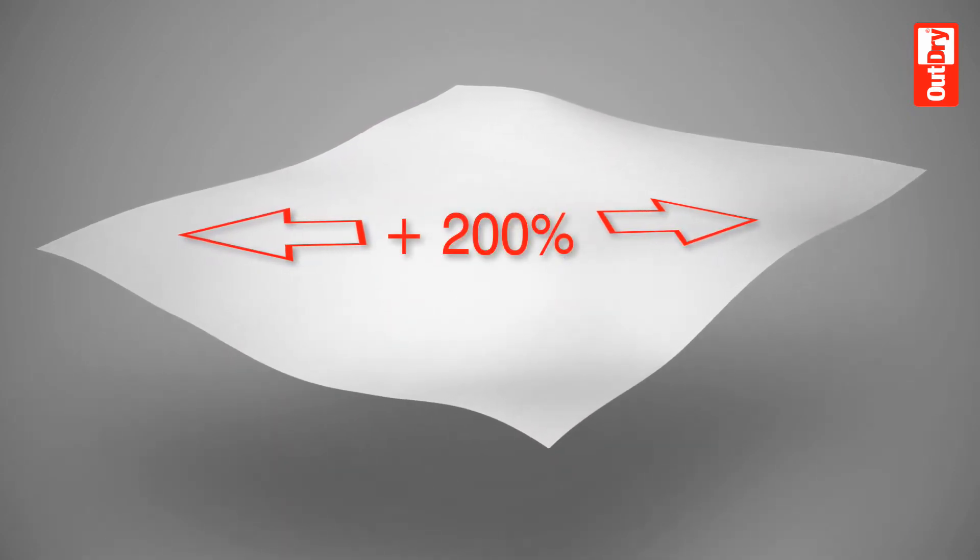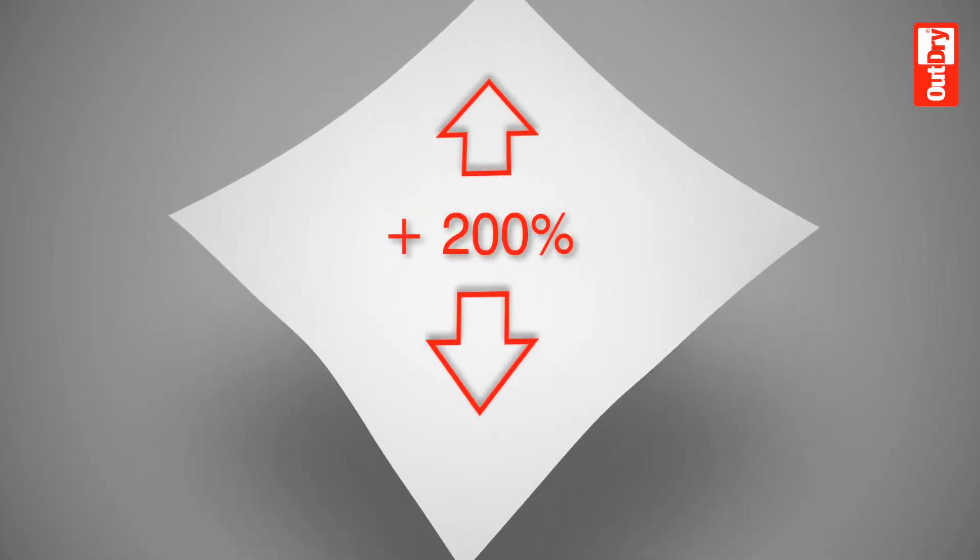The membrane is also extremely elastic, allowing it to fit the shape of the glove perfectly during the lamination process. To optimize the OutDry lamination process,